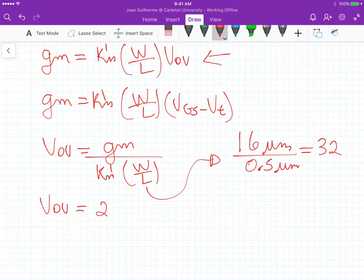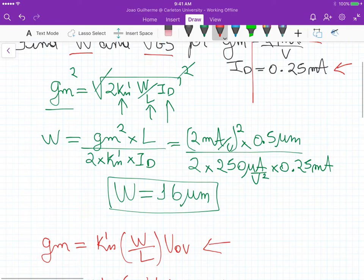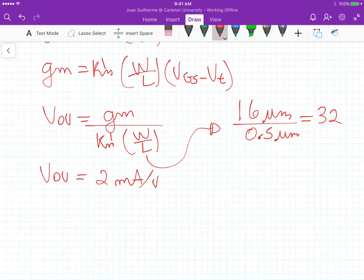so it gives us 32. So V overdrive equals 2 milliamps per volt divided by KN that's 250 microamps per square volts times the aspect ratio